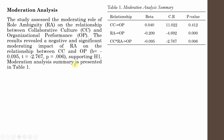The moderation analysis summary is presented in Table 1. Look at the summary — your relationship assessed, your beta values (that is your regression weights), your T values, and your p-values.